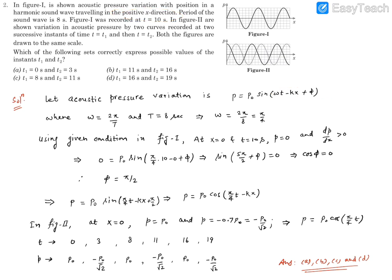Now let's consider from this picture: at x equal to 0, when the time was 10 seconds, the pressure was found to be 0. So from figure one, the condition is x equal to 0, t equal to 10 seconds, p comes out to be 0. Moreover, dp by dx if we calculate this is also positive. So these are the initial conditions that are given to us.